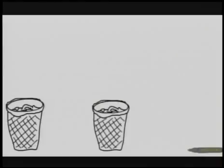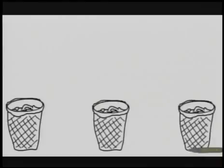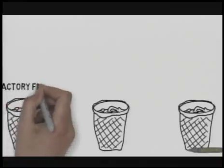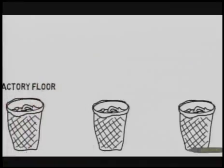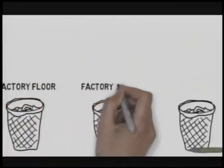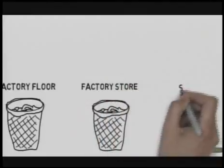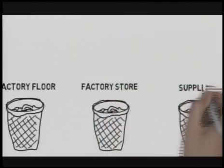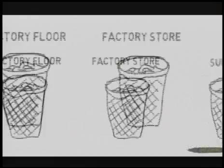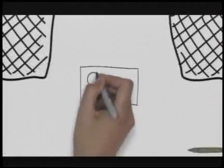How does it work? Let's explain Kanban by describing the three-bin system. This is a simple system that can be implemented for supplied parts where there is no in-house manufacturing. One bin is on the factory floor — the initial demand bin. One bin is in the factory store — the inventory control point. And one bin is at the supplier's business.